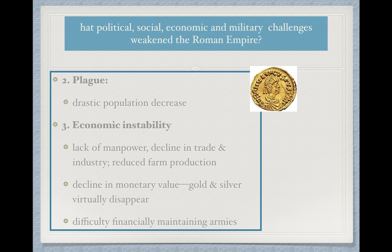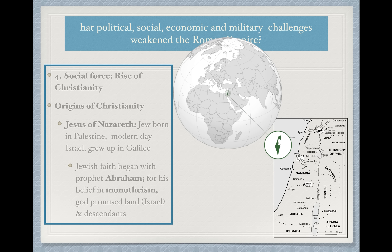Thirdly, we have economic instability. There's a lack of manpower because of the reduction in population. Trade is declining and industry is declining. There's not as much farm production. The money is starting to disappear and losing its value. And there's the difficulty maintaining all those expensive armies needed to protect this huge empire. So we're starting to see instability there.